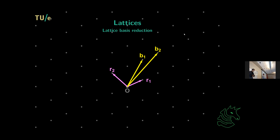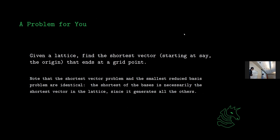For example, r1 and r2 also form the same set of points — they're also a basis. You could make every single point here out of r1 and r2. Notice that r1 is actually a combination of v1 and v2, and so is r2. So there are many valid bases for the same lattice.